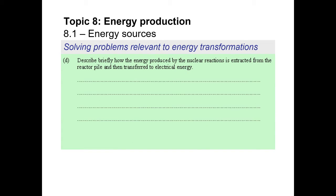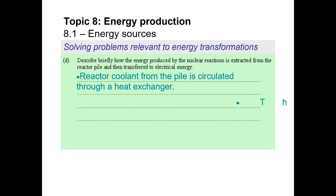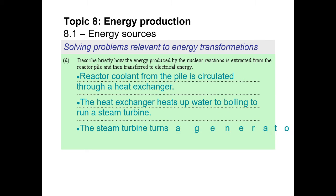Part D: describe briefly how the energy produced by the nuclear reactions is extracted from the reactor pile and then transferred to electrical energy. The fission of uranium-235 releases heat and the kinetic energy of the neutrons, but it's the heat we really care about. That heat energy is piped through a system that moves through a tank of water — the water heats up and produces steam. The steam rotates a turbine, and that generates electricity.